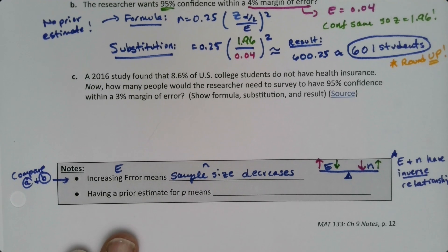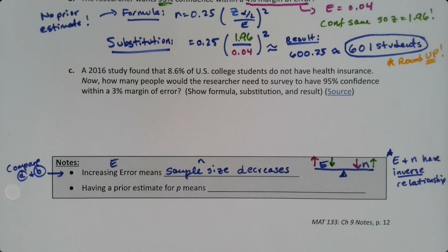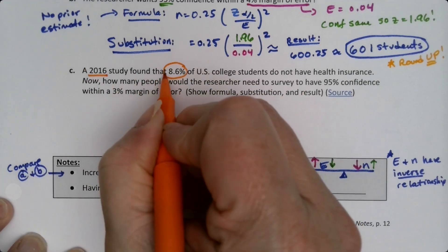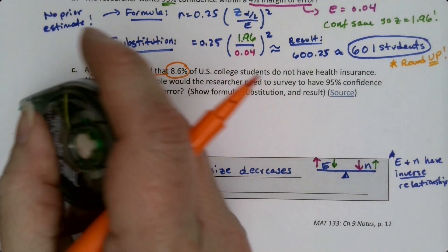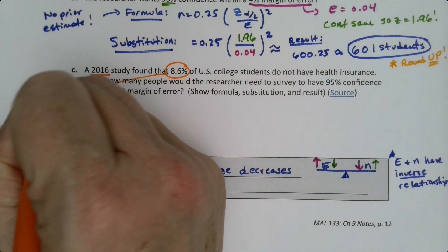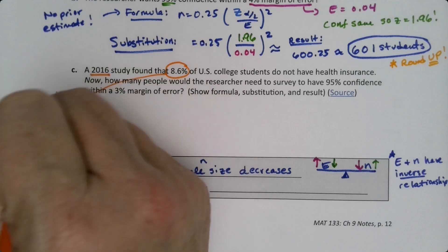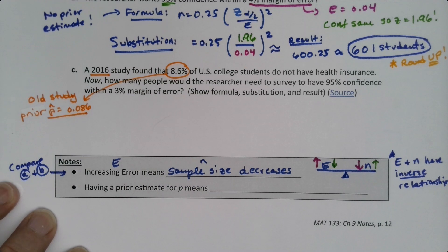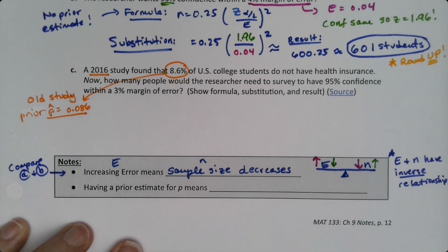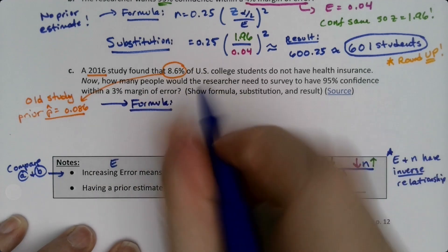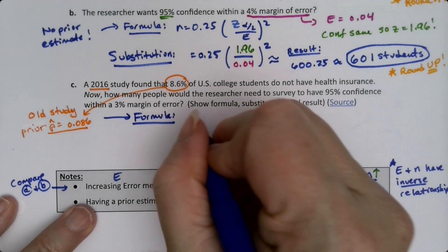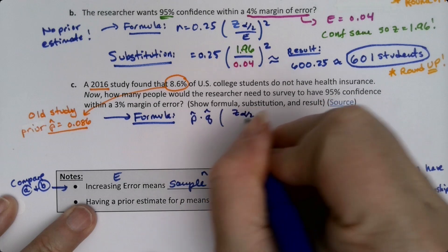Now let's look at part c. A 2016 study found that 8.6% of U.S. college students did not have health insurance. We have an old study — an old p-hat — so this is the prior estimate case. The prior p-hat is 0.086. That means we use the other formula: n equals p-hat times q-hat times (z-alpha/2 divided by the error), squared.